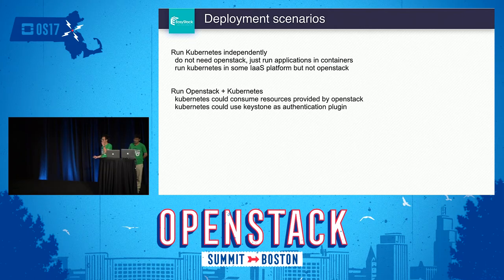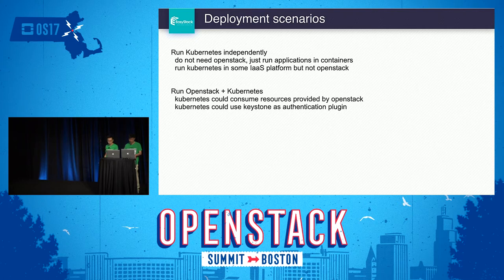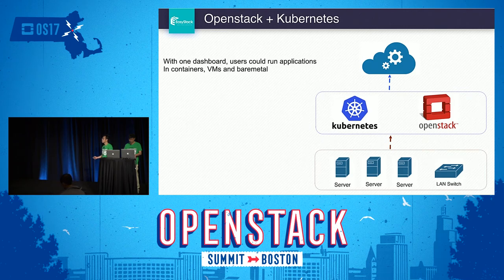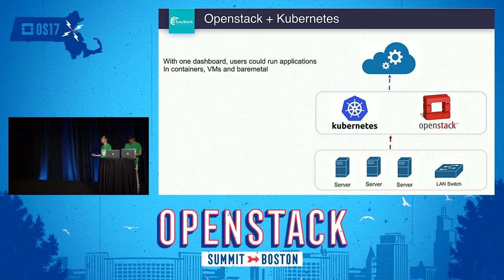In some cases, users don't need OpenStack — they just want to run containerized applications, or they have another platform that is not OpenStack. In our product, we recommend deploying OpenStack and Kubernetes together, so that with one dashboard, users can run applications in containers, VMs, and bare metals.